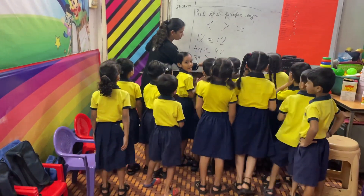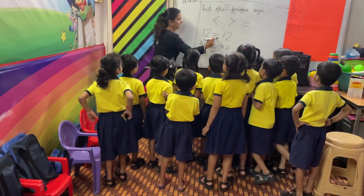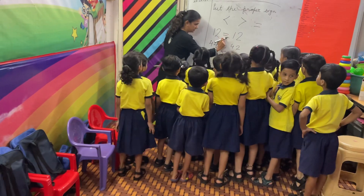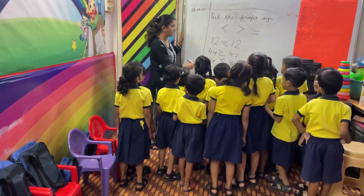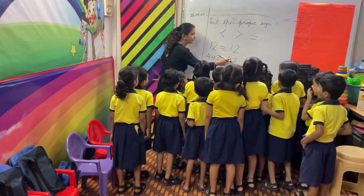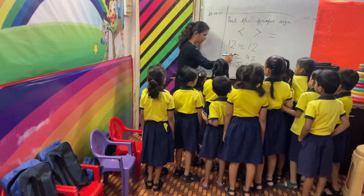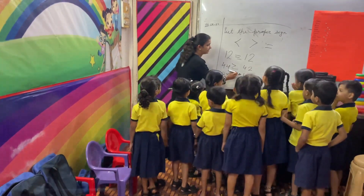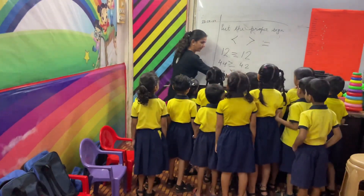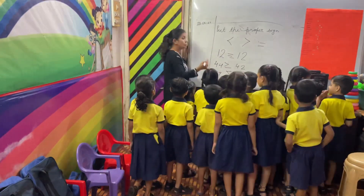So, 12 is equal to 12 — the equal to sign. 44 is bigger than 42, so the face opens toward 44. 39 is smaller than 44, so again the face opens toward 44 — the bigger number. The rule is: the face always opens toward whichever number is bigger.